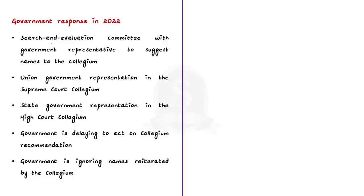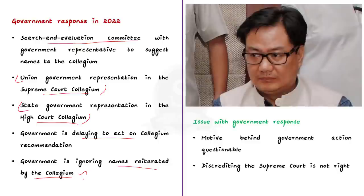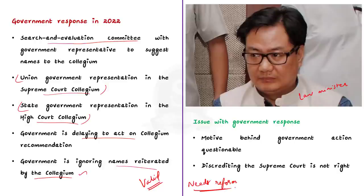What is a memorandum of procedure? It is a document framed by the government in consultation with the Chief Justice of India, laying down the procedure for the appointment of judges to the Supreme Court and various high courts. It is a step-by-step selection process for the appointment of judges, involving both the government and the collegium, trying to remove ambiguities and promote a consensus-oriented appointment process. The memorandum of procedure is not mandated through legislation or the text of the constitution — it was first issued in 1947 and last updated in 1999 after the third judges case. Now the union law minister is asking firstly for the formation of a search and evaluation committee that will suggest names to the collegium, with government representatives included, and secondly for union government representation in the Supreme Court collegium and state government representation in the high court collegium.